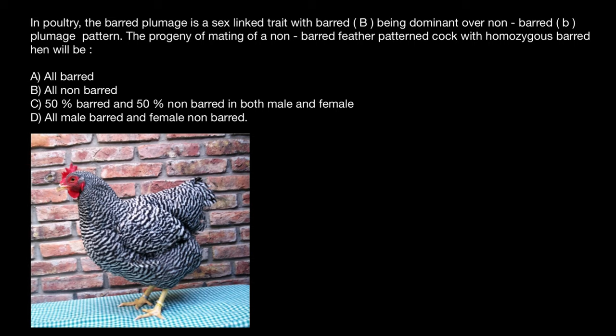In birds, sex determination is different from what you already know in mammals, where males specify the sex of the progeny, because males are heterozygous for sex chromosomes and can produce gametes of two kinds: one that carries the Y chromosome, and the other kind which carries the X chromosome. And female gametes only carry the X chromosome.